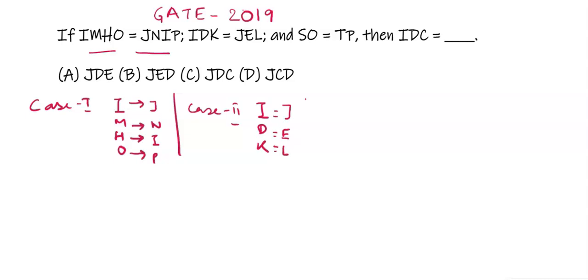In the same way, case 3: SO. The next alphabet of S is T, the next alphabet of O is P.